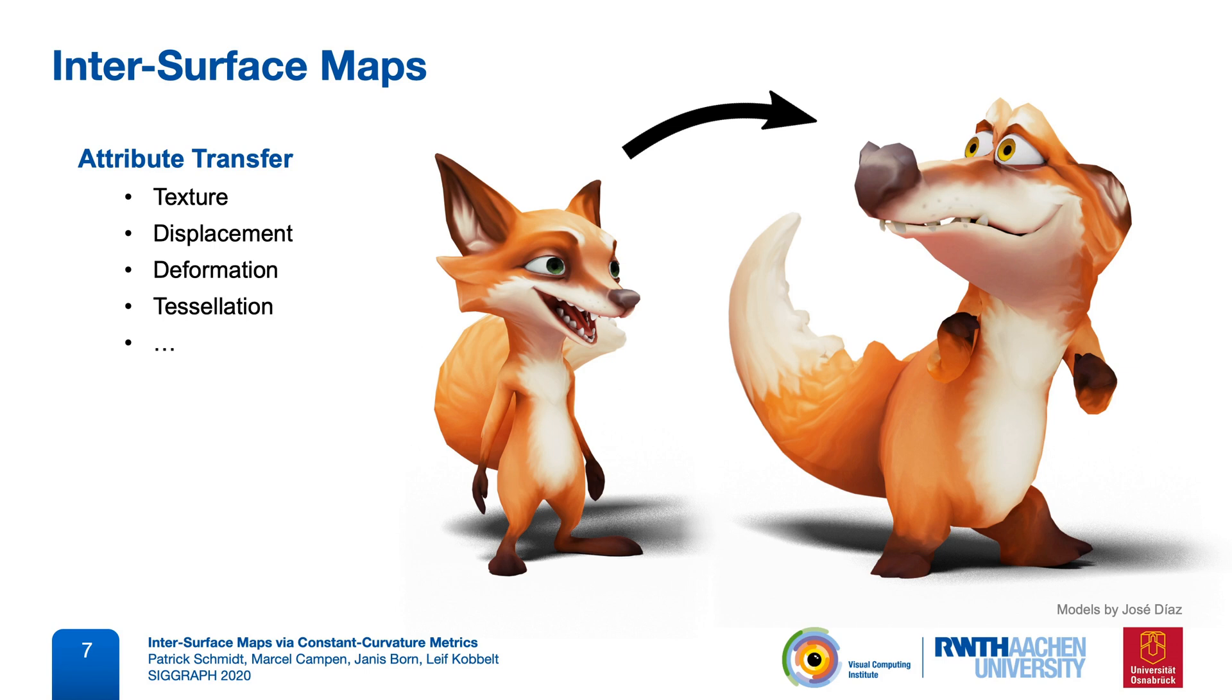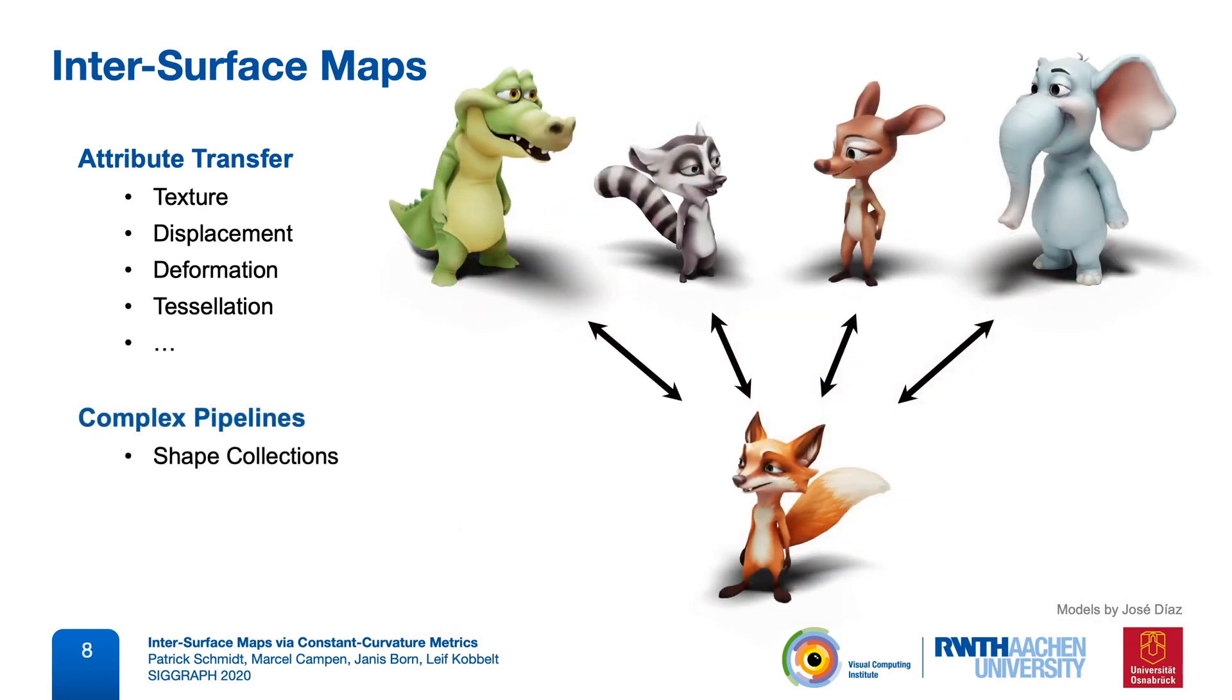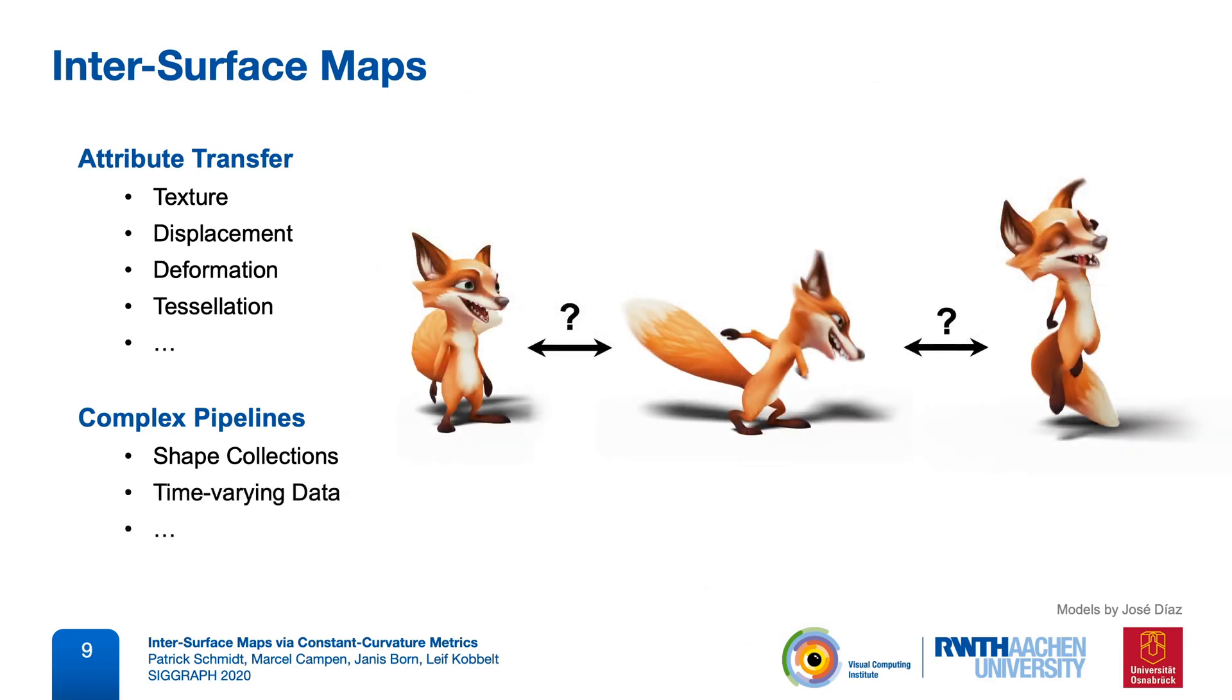Inter-surface maps can also be a building block in more complex shape processing pipelines. Think of processing large shape collections, where we often need to map many meshes to a common base domain, or having to analyze time-varying data, for which correspondence between frames is not given. We might need to interpolate intermediate frames, to transport data across the entire sequence, or to perform compatible remeshing.